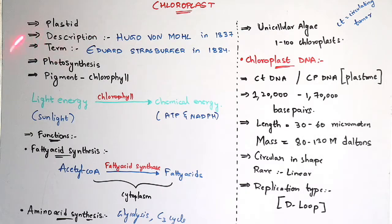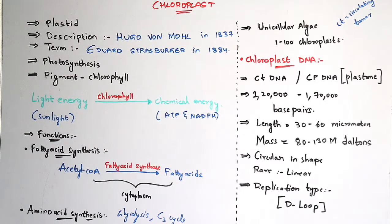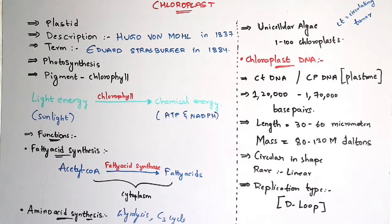The other name of this chloroplast is known as Plastid. Let us know the discovery — the description of the chloroplast was given by Hugo von Mohl in 1837. Description here means the introduction of the chloroplast: the structure, the functions, and what chloroplast means — all of this description was given by Hugo von Mohl in 1837.